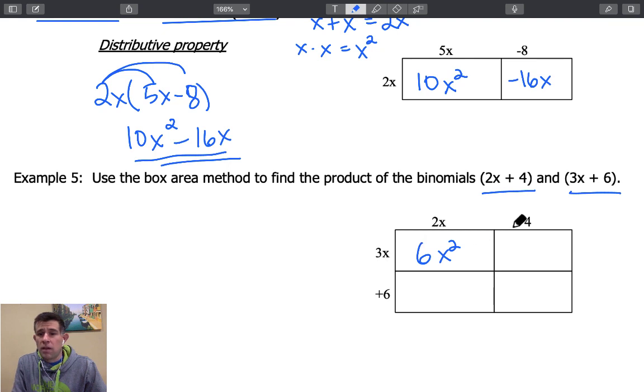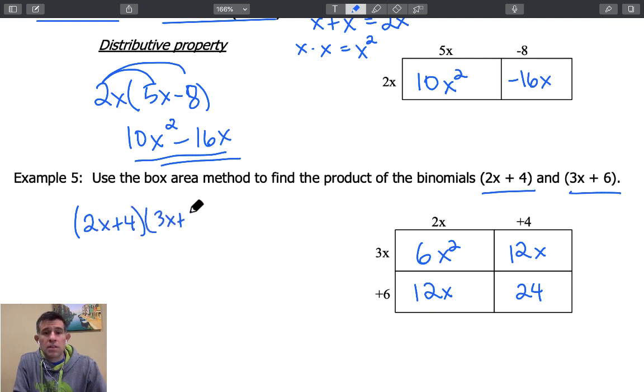So that 3x times 2x gives me 6x squared. That 3x times a positive 4 gives me 12x. 2x now times positive 6 gives me another 12x. And then finally a positive 6 and a positive 4 gives me positive 24.